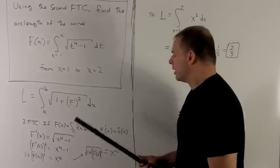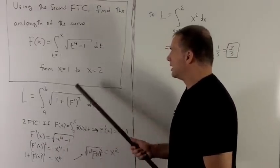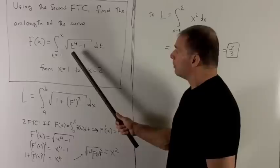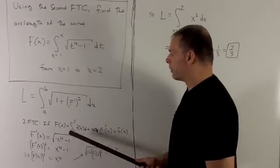So for the example as given, the derivative of big F is going to be equal to just take what's in the integral, and where I have a t, I put an x. It's going to be radical x to the 4th minus 1.